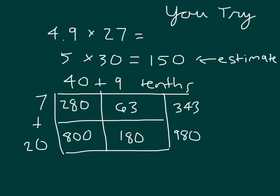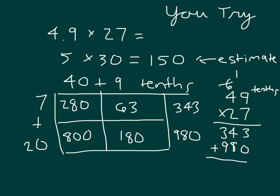I'll set up the standard algorithm, where it was 4 and 9 tenths, 49 tenths that is, times 27. 7 times 9 is 63, regroup of 6. 7 times 4 is 28, plus 6 is 34. Place a 0. 2 times 9 is 18, regroup of 1. 2 times 4 is 8, plus 1 is 9, and as you can see, those partial products do match up.